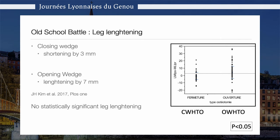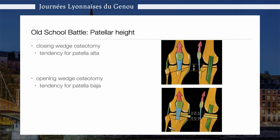There will also be some discussion on leg length, and I must admit that with an opening wedge osteotomy you have a little bit more lengthening of the lower limb versus closing wedge osteotomies. The same goes for patellar height. Clinically, however, there are very little downsides of an opening wedge osteotomy and the potential concern of patellar baja.